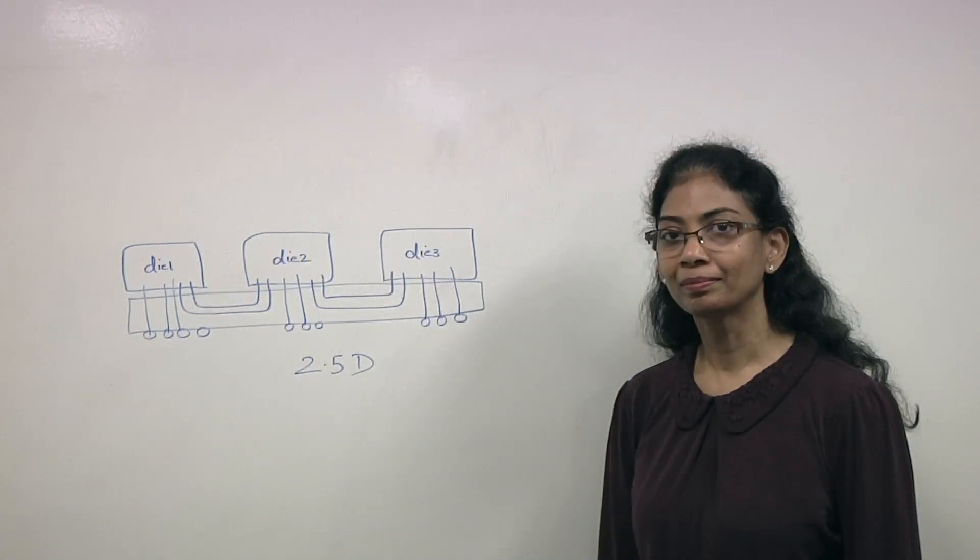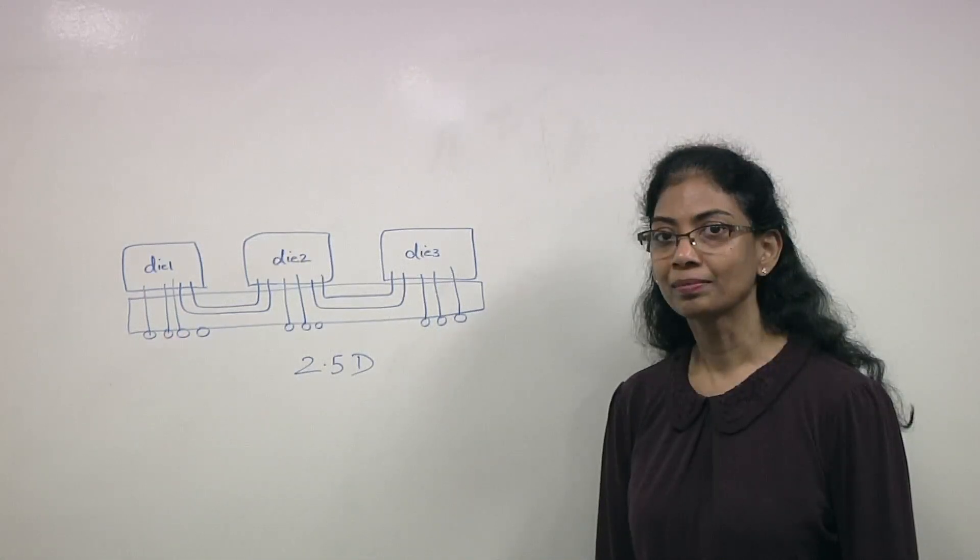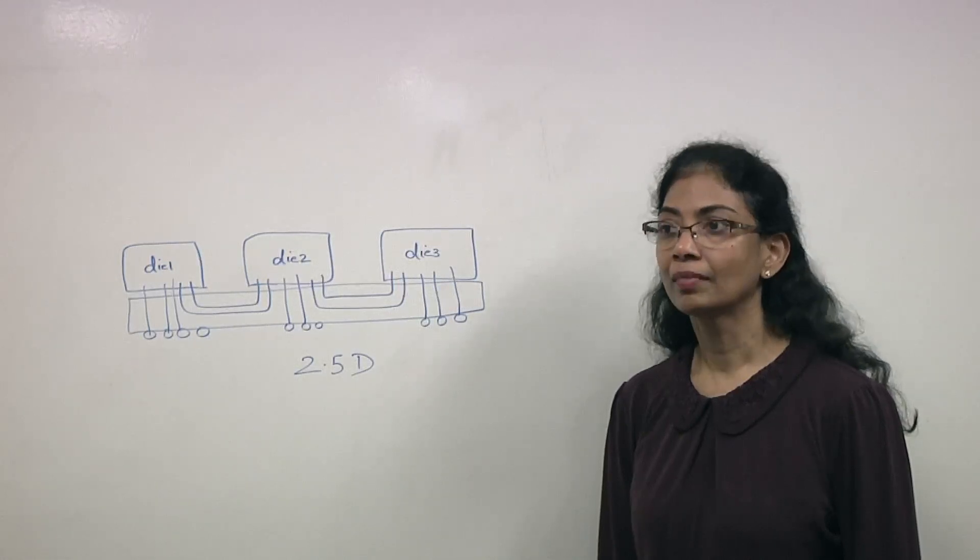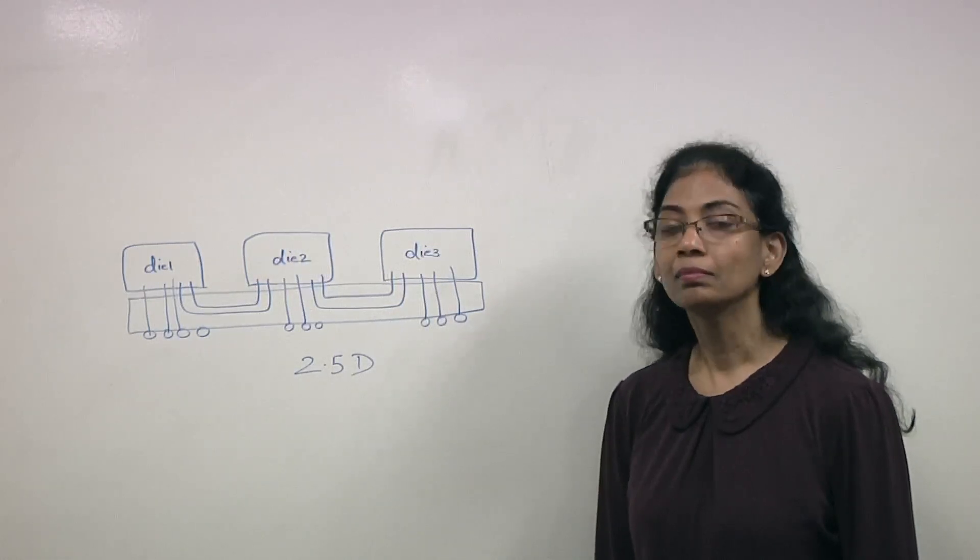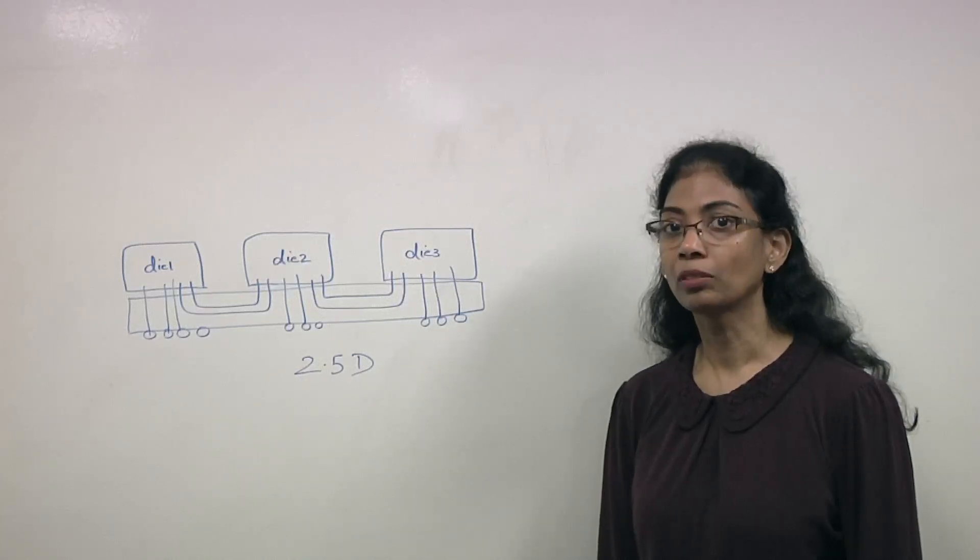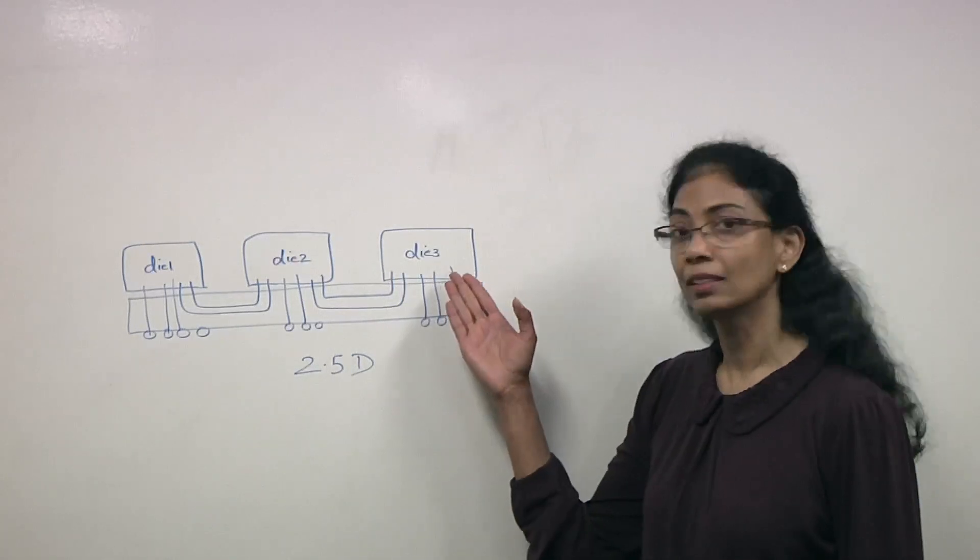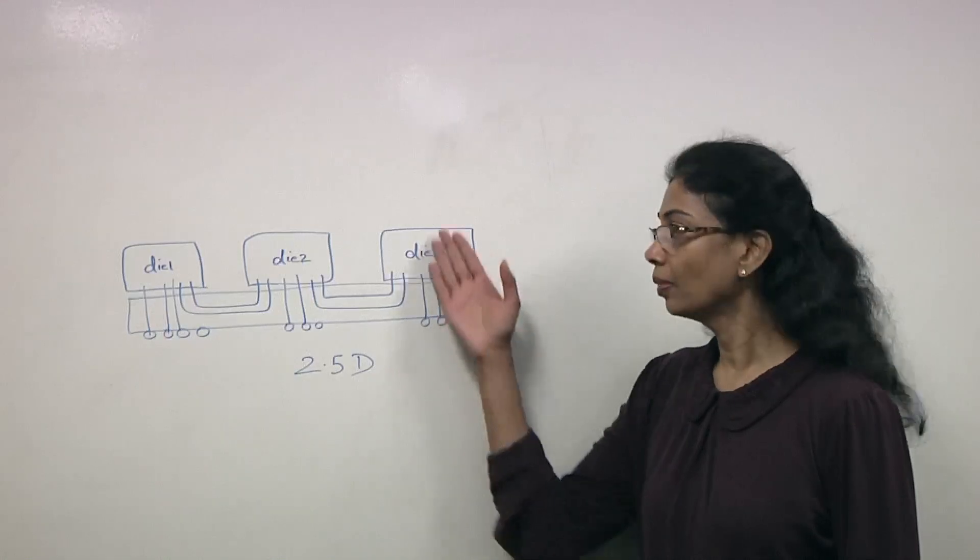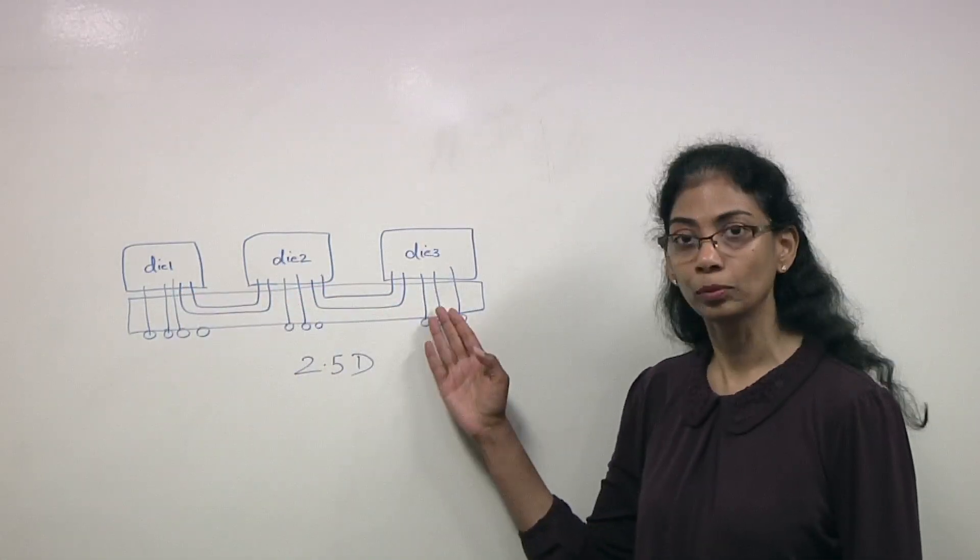2.5D typically sits on an interposer, right? And then you have memory connected to that via HBM or whatever it happens to be? Correct. HBM is high bandwidth memory, and one of these dies could be your HBM. And that's accessing any of the other dies through the interposer.